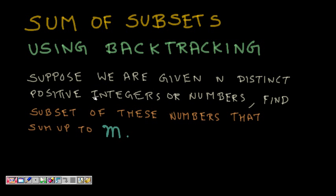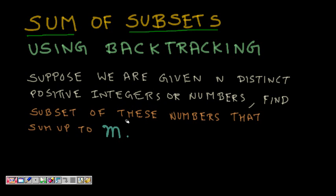Today we will see the problem of Sum of Subsets using backtracking. We are given n distinct positive integers and a sum m, and we have to find if any subset of this set sums up to m.